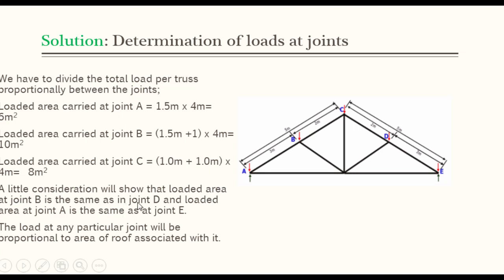A little consideration will show that the loaded area at joint B is the same as in joint D, and loaded area at joint A is the same as at joint E. The load at any particular joint will be proportional to the area of roof associated with it. Since we have calculated the loaded area associated with each of these joints, we can now determine the joint loads at each of the joints.